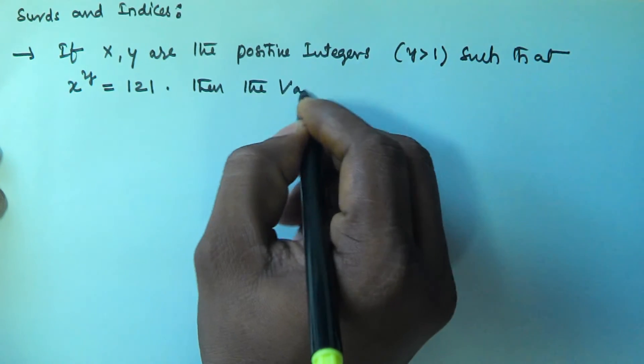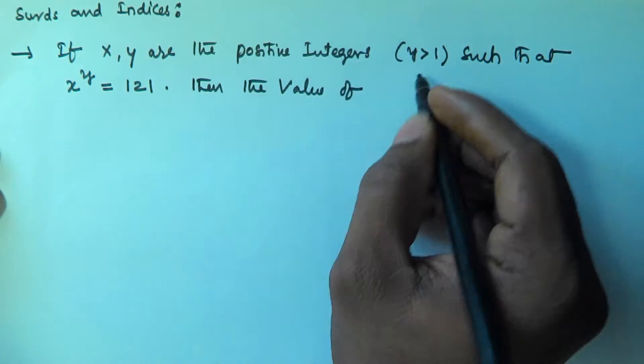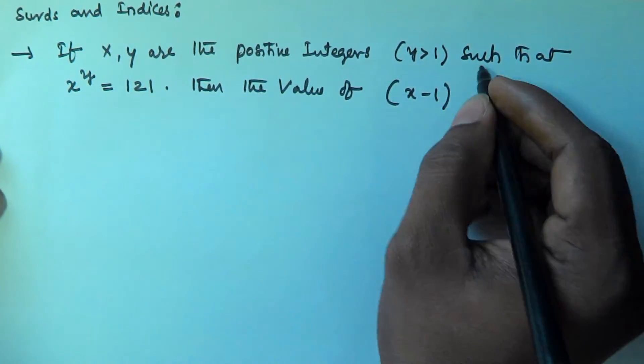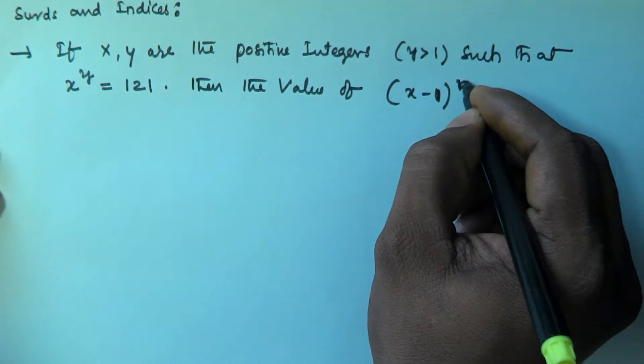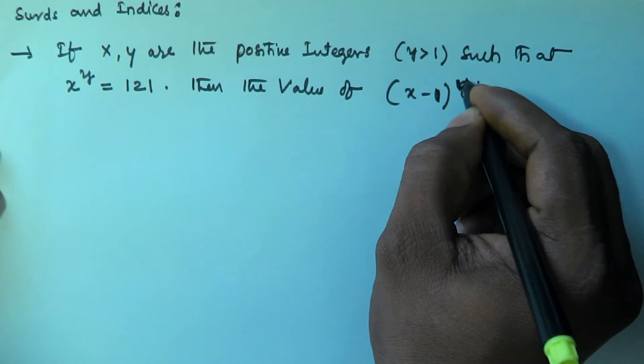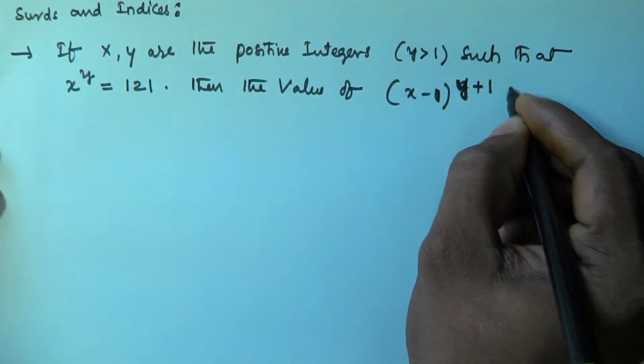Then, the value of (x minus 1) to the power of (y plus 1) is: